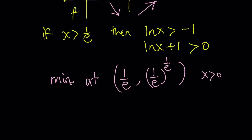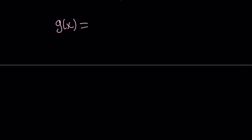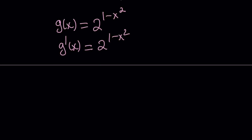Now let's check the second function, g of x equals 2 to the power 1 minus x squared. You don't need to ln both sides here — you can just differentiate because this is exponential. When differentiating b to the power f of x, you multiply by the derivative of the exponent, which is negative 2x, times ln 2. We need that ln 2 correction because when our base is not e, the derivative must be adjusted.